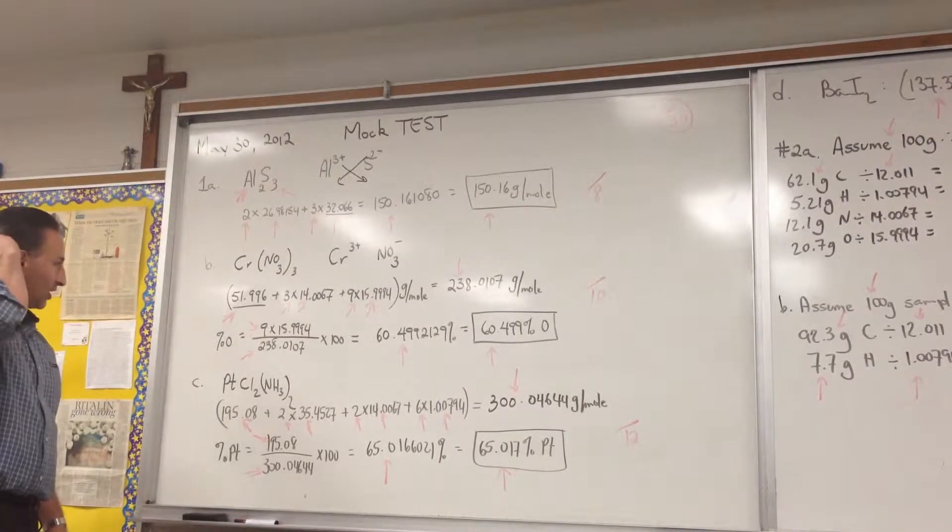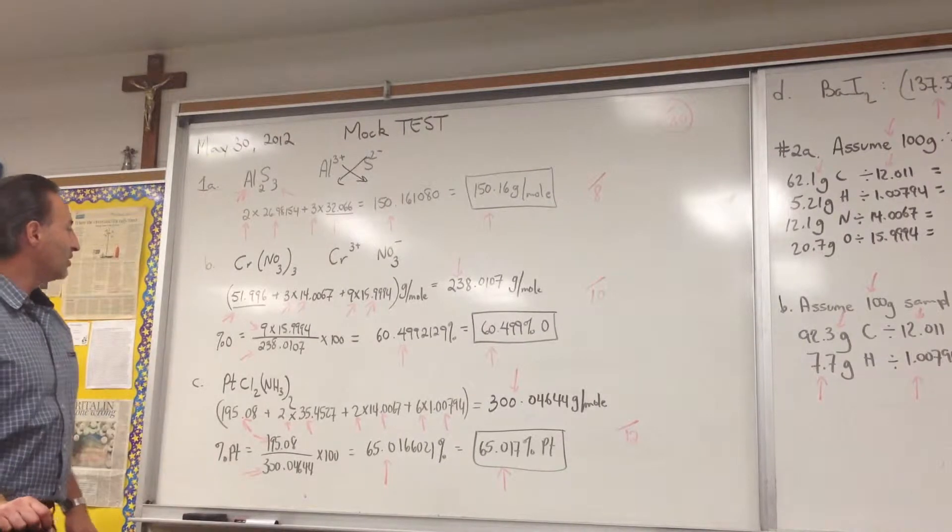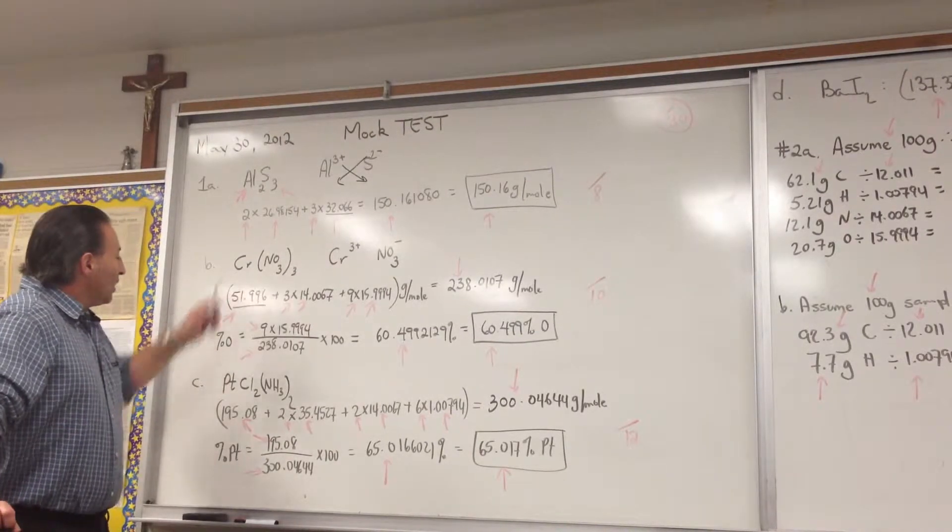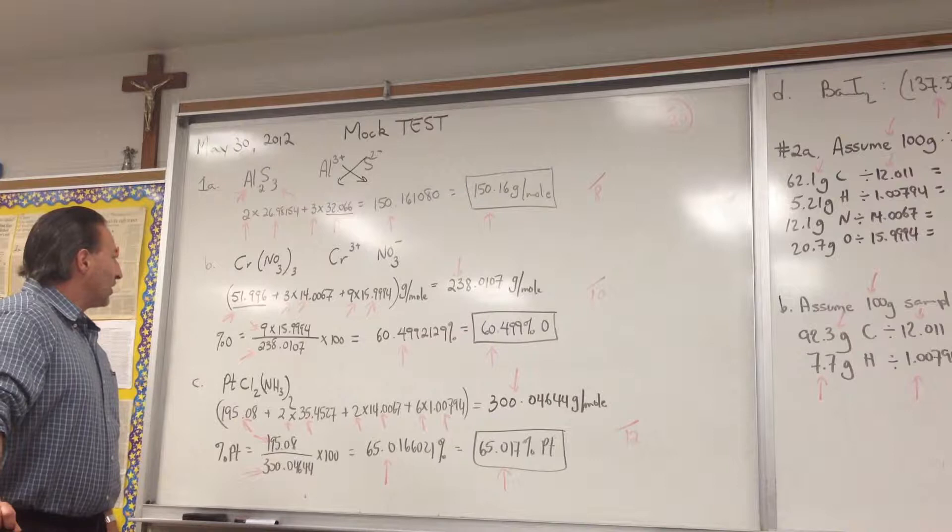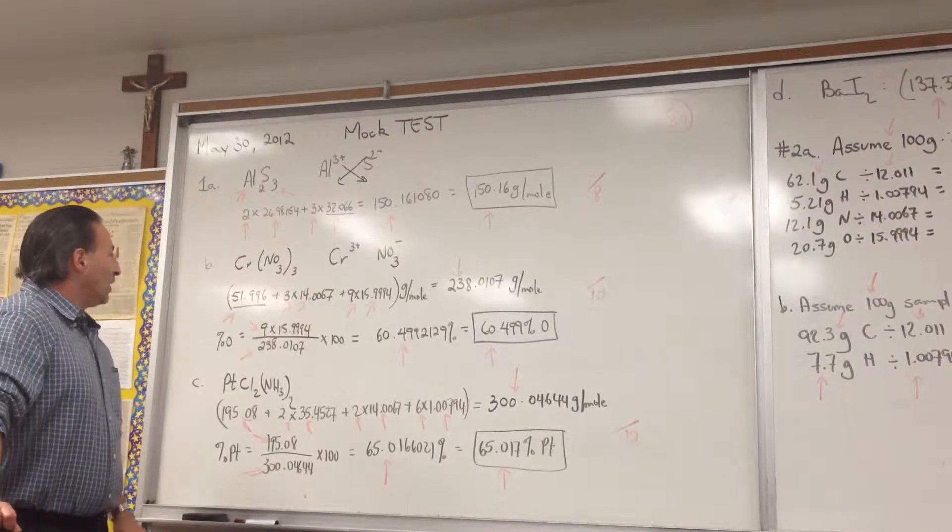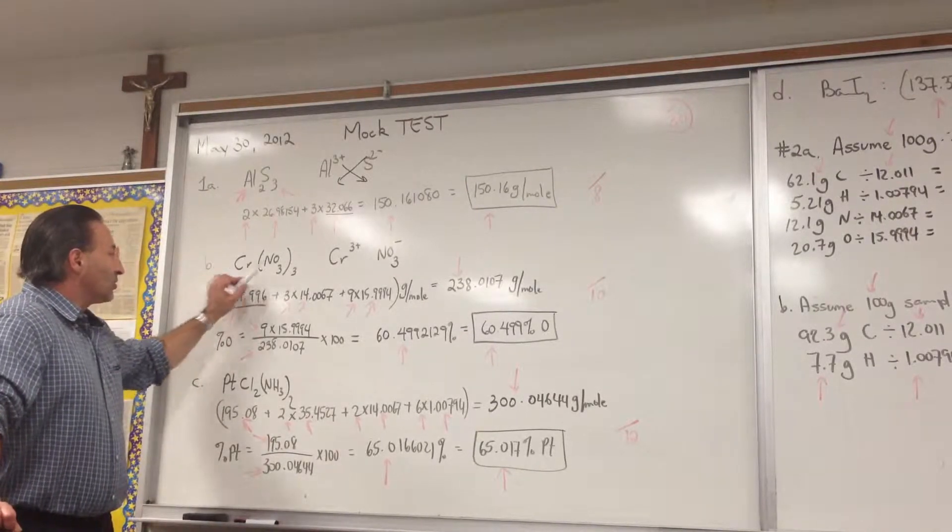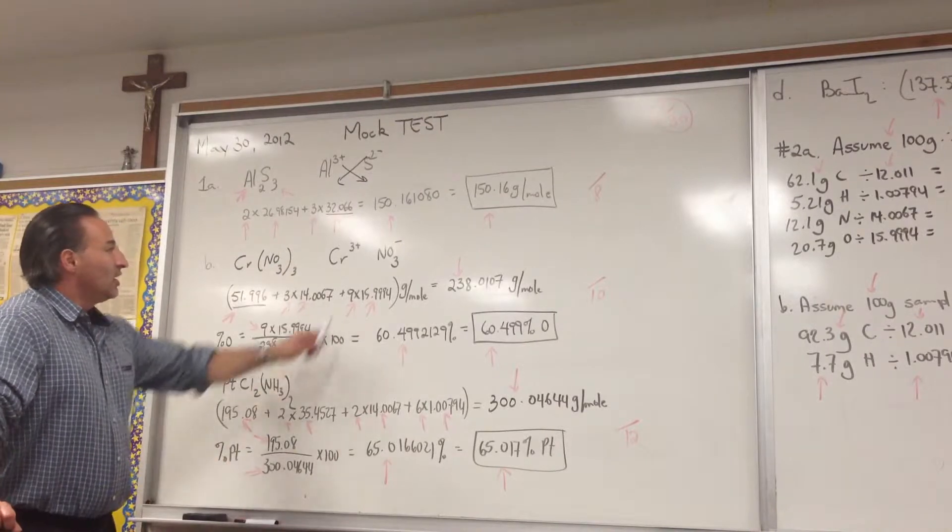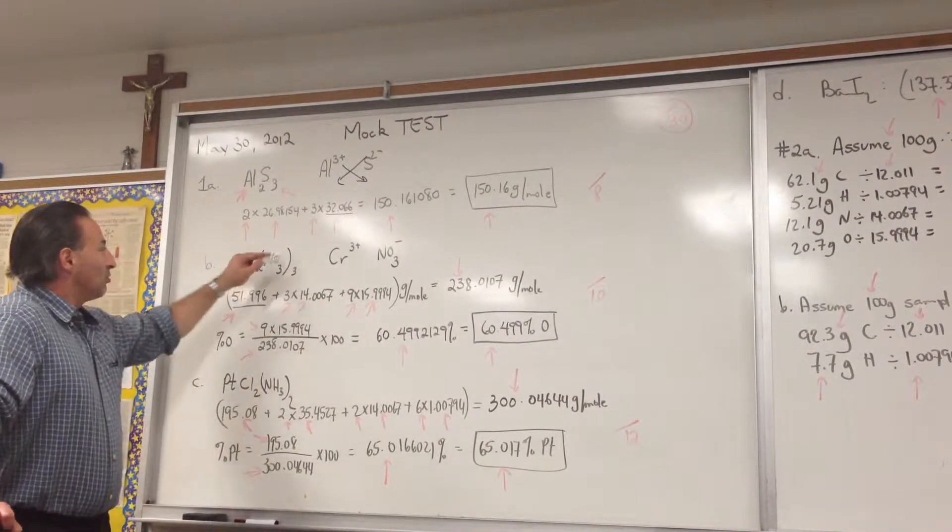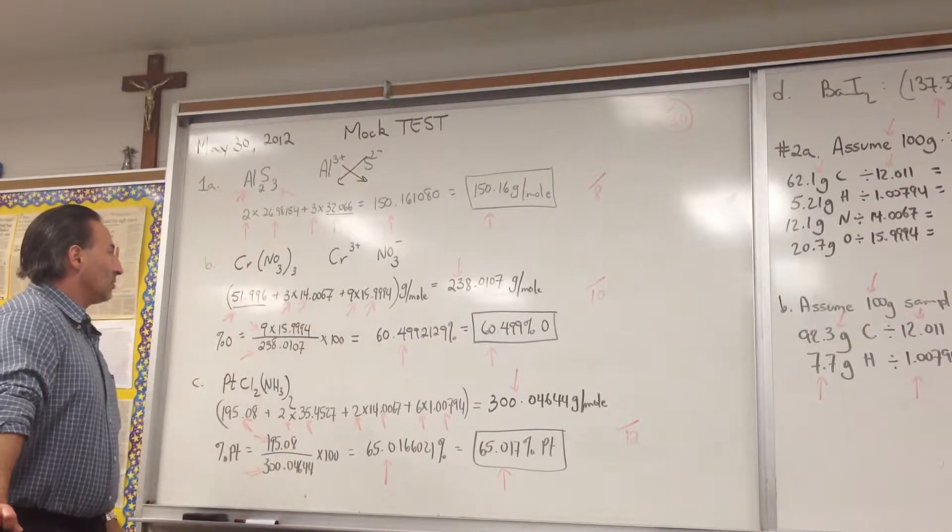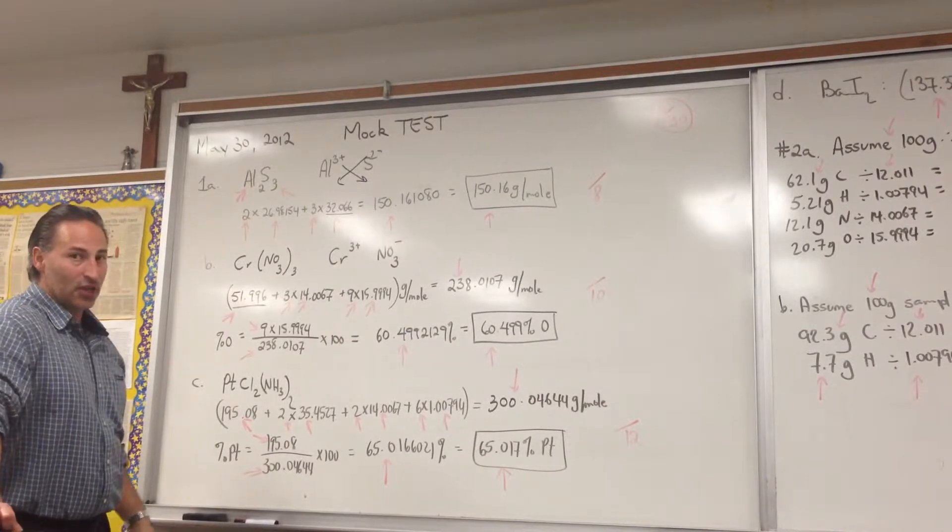The second question is to find the percent composition, the percent oxygen in chromium nitrate. It's chromic nitrate, so chromic has a plus three charge, nitrate is minus one, so you need to bracket the nitrate and put a three around it because that's what's going to give it a charge balance.